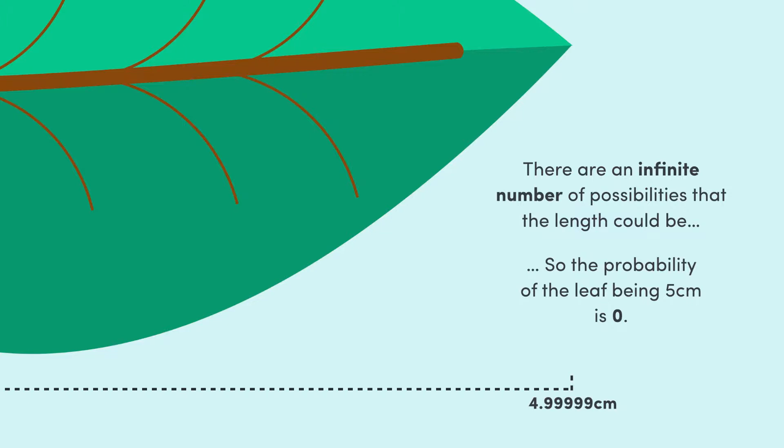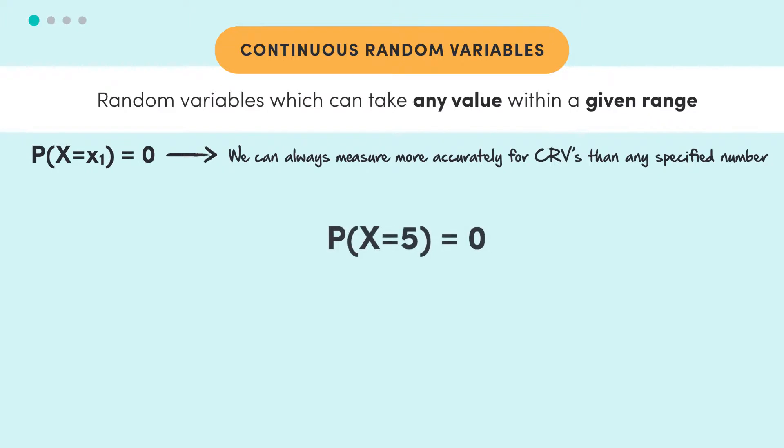We start to think in terms of intervals, because while the probability that x equals five is zero, the probability that x is between 4.9 and 5.1 is not zero. So in this video, we're going to be paying particular attention to the probability of intervals. That's going to be our main plan of attack.